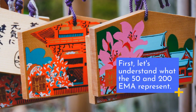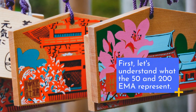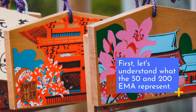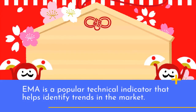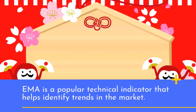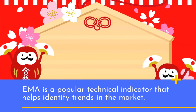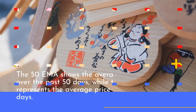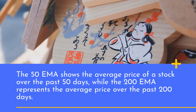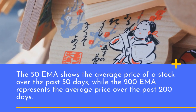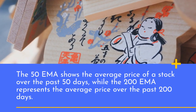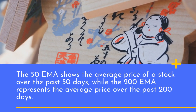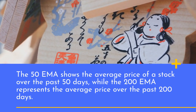First, let's understand what the 50 and 200 EMA represent. EMA is a popular technical indicator that helps identify trends in the market. The 50 EMA shows the average price of a stock over the past 50 days, while the 200 EMA represents the average price over the past 200 days.